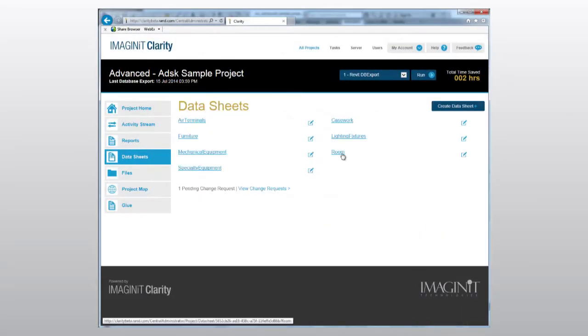To make a data sheet using Clarity, your BIM coordinator runs a task and uses the default data sheets provided, or they can customize the information that's pulled, the visual look, and more to match approved styles and standards for the project.